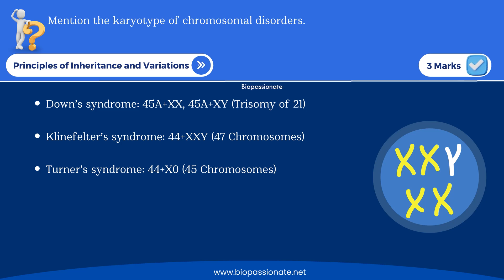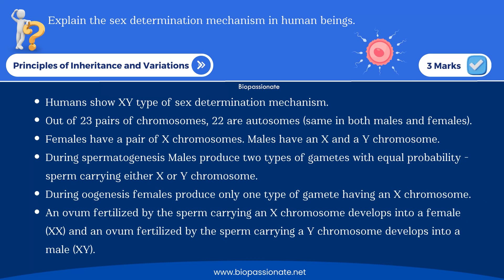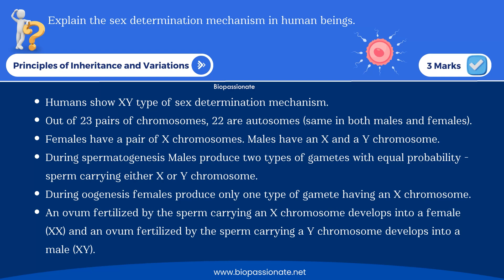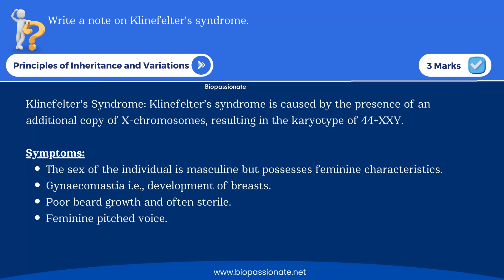Another question for three marks: explain the sex determination mechanism in human beings. Discuss the chromosomal number in parents as well as offspring, and remember to write the schematic representation — if you include it, you will get full marks. Also: write a note on Klinefelter syndrome.